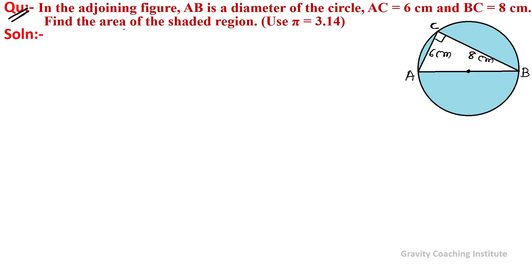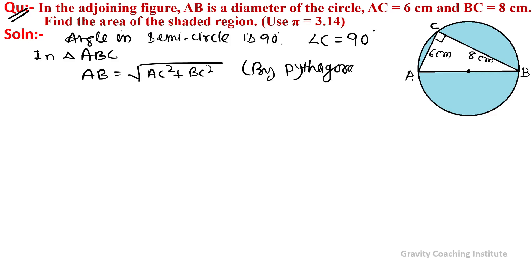We know that angle in semicircle is 90 degrees, so angle C = 90°. So in triangle ABC, by Pythagoras theorem, AB² = AC² + BC².